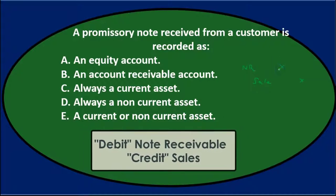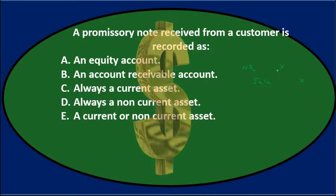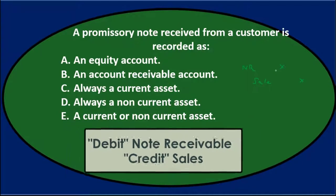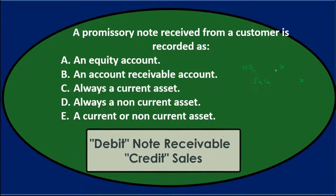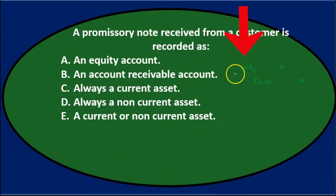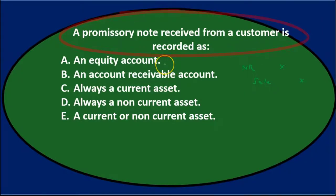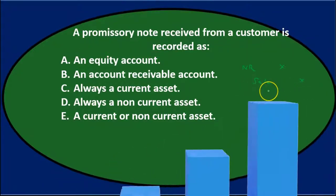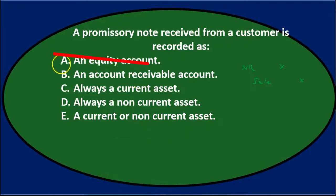Typically, the dollar amount was larger or longer-term, so we want a formal note. The note receivable is typically going to be some type of asset — we made a sale and instead of accounts receivable we have a note receivable. So the promissory note isn't typically going to deal with equity, although the other side is increasing net income and therefore increasing equity, but the note itself isn't equity.